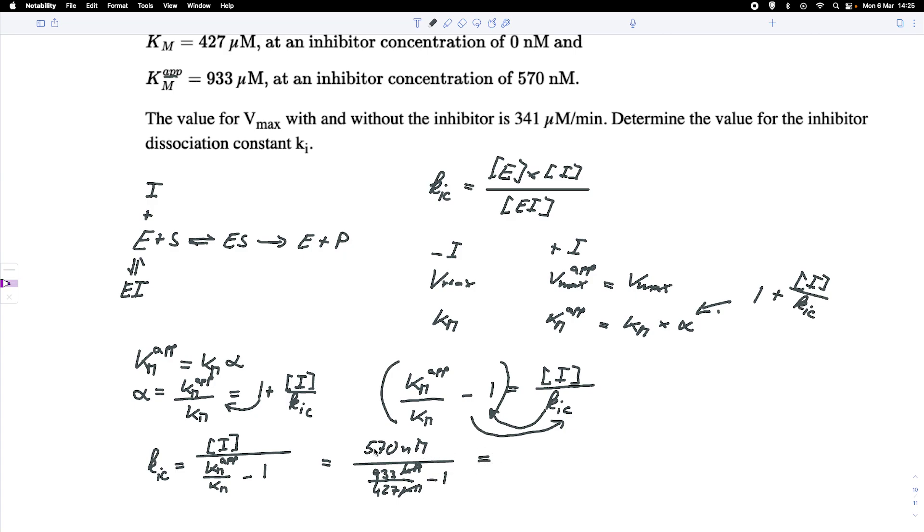And if we put that into a calculator, we get a value of 481. The unit that we have is the same as the concentration unit for the inhibitor, so that would be 481 nanomolar.